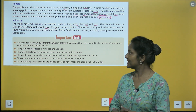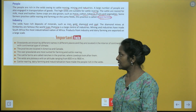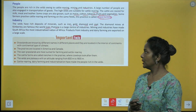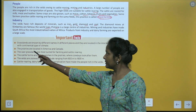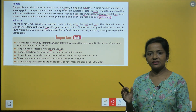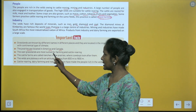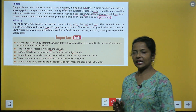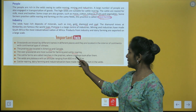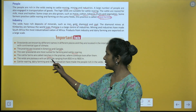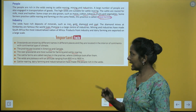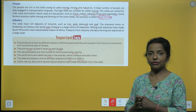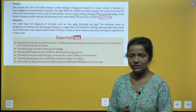Summary of the chapter: grasslands are known by different names in different places and located in the interior of the continent with continental type of climate. The prairies are located in America and Canada. The cattle farmers are called ranchers in the prairies, where cowboys look after them. The velds are plateaus with an altitude ranging from 600 to 1600 meters. Cattle rearing, dairy farming and industrialization have made the people rich in the velds.